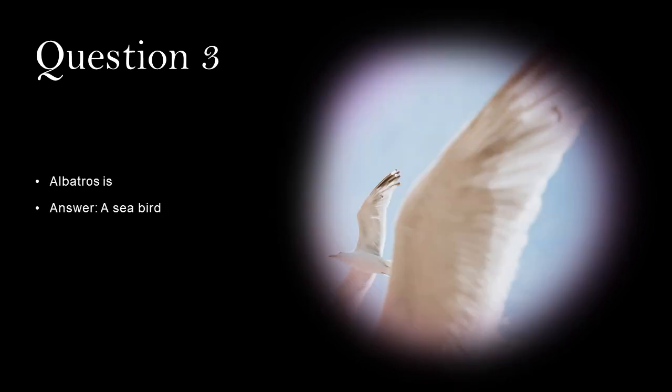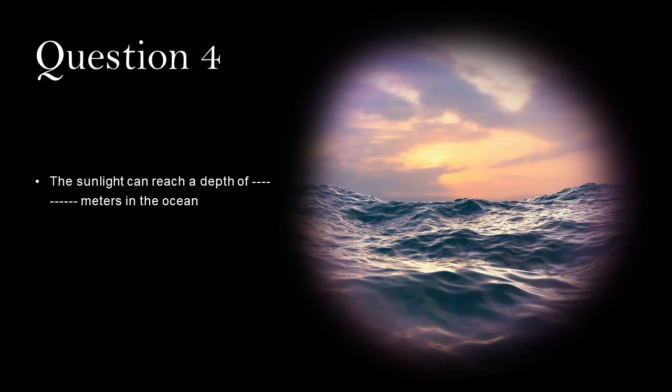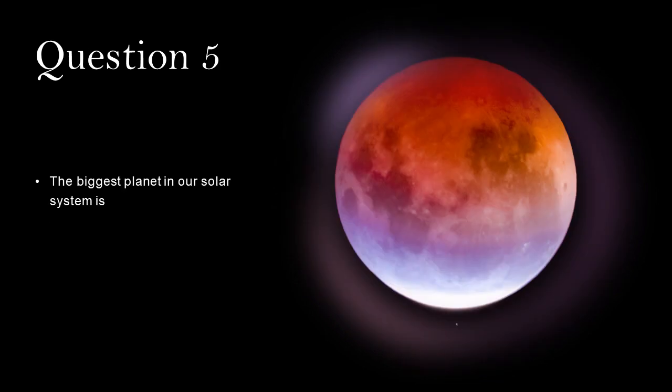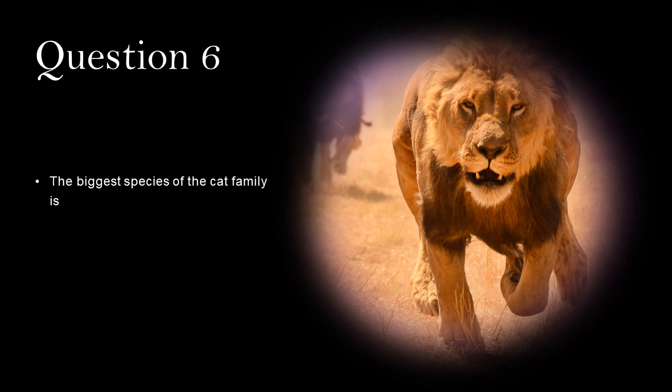Albatross is a seabird. The sunlight can reach a depth of 80 meters in the ocean. The biggest planet in our solar system is Jupiter. The biggest species of the cat family is Tiger.